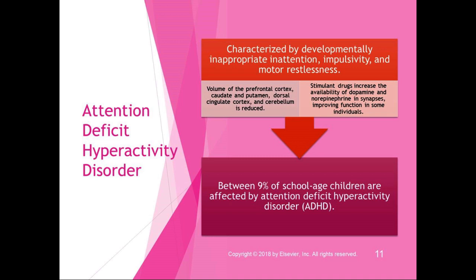ADHD is characterized by developmentally inappropriate attention, impulsivity, and motor restlessness. The cause is unknown, but examination has found reduced volume in the prefrontal cortex, the caudate and putamen (part of the basal ganglia complex), the dorsal cingulate cortex, and the cerebellum — clearly something happened during brain development. Stimulant drugs are used to increase availability of dopamine and norepinephrine at synapses, which improves function in some individuals. It's estimated that 9% of school-age children are affected by ADHD.